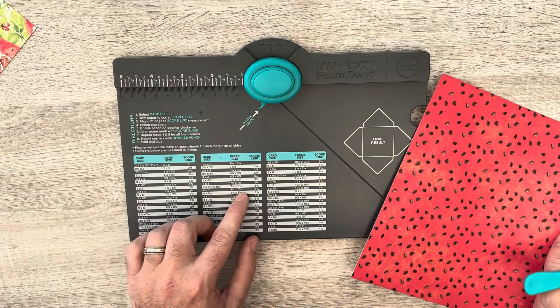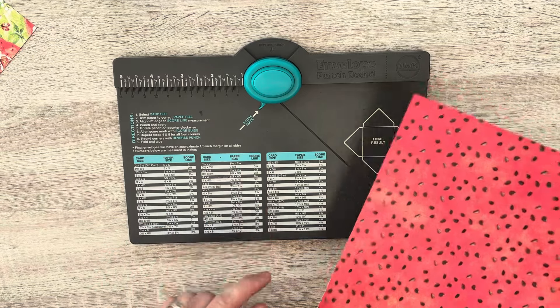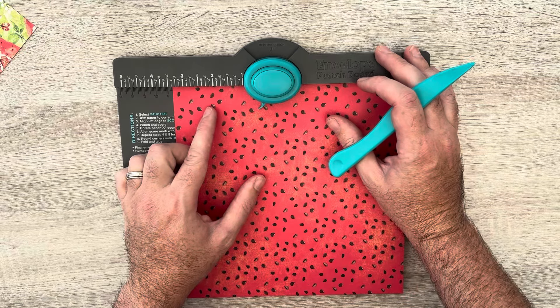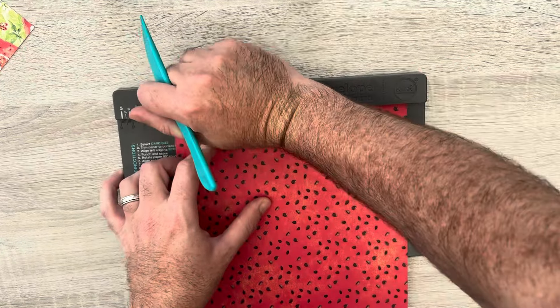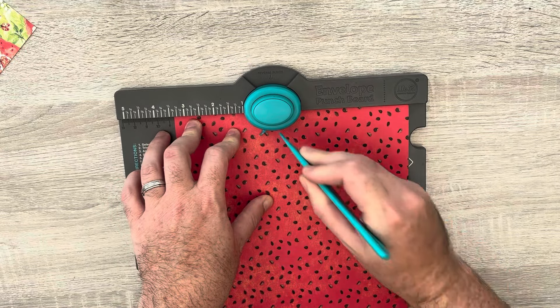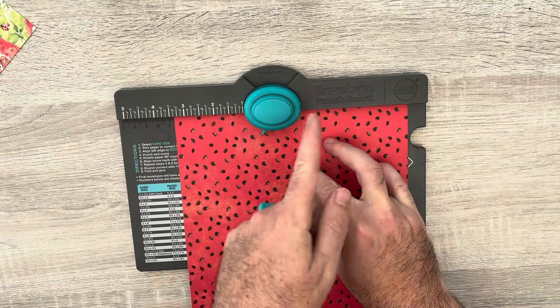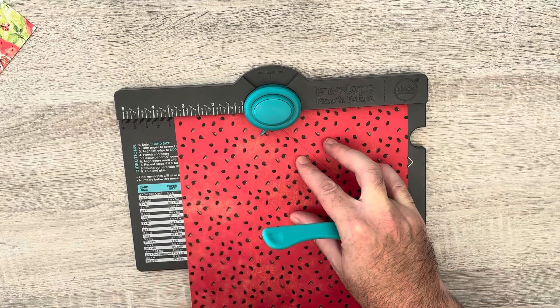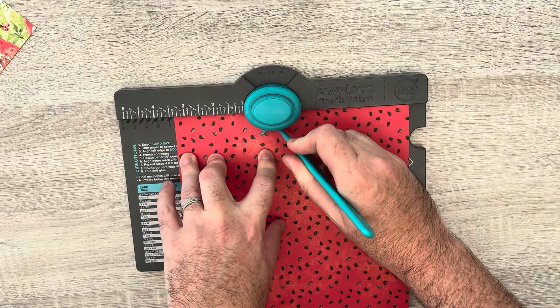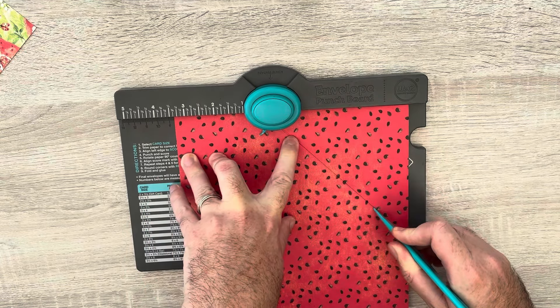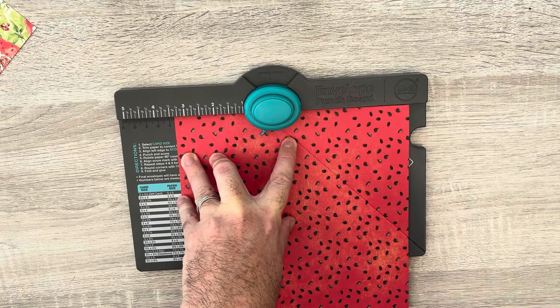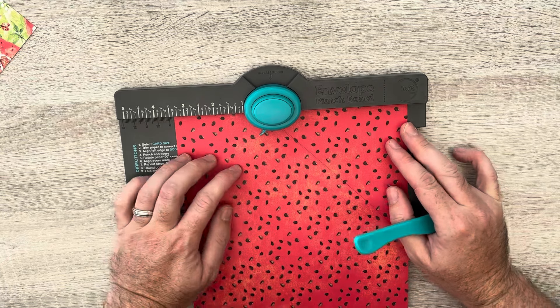So when I go to my 6x4 it says to 3 and 3/8ths. So it's 3, 1, 2, 3 and 3/8ths. I'm just going to punch and score. So that's all I've done is take my paper to 3 and 3/8ths and then there's a little trough, a little crease where I can take my scoring tool and score down.